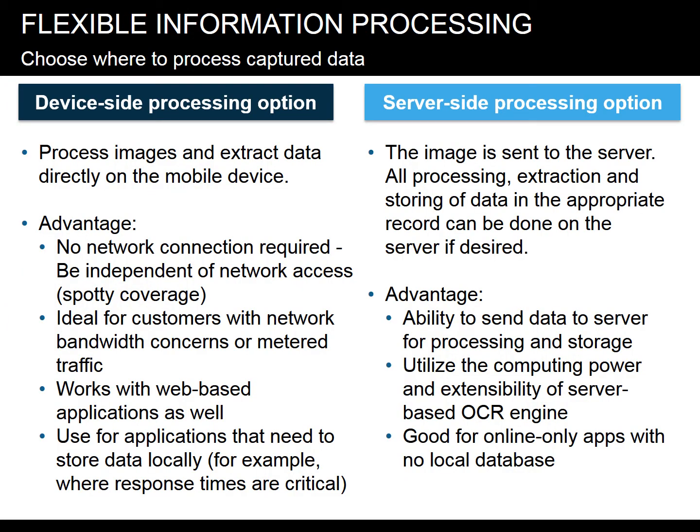Once a high-quality document image has been captured, the most important phase begins: extraction of the information needed from the document. Our flexible advanced document imaging software enables three methods for end-to-end capture and processing of documents, allowing customers to select the method that works best for their technology environment. The mobile device processes images, extracts data, and stores the extracted data in the right record on the device — no network connection required. Workers who lose wireless network access can continue to work, ideal for spotty coverage areas or applications where response times are critical.